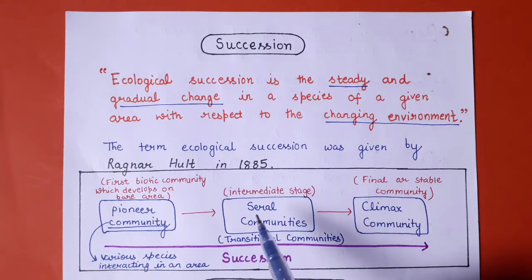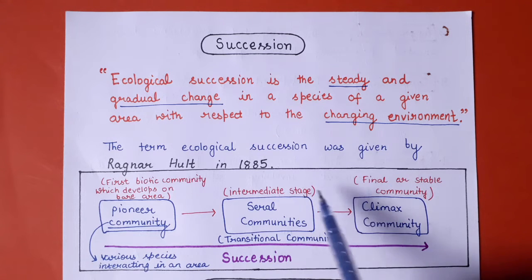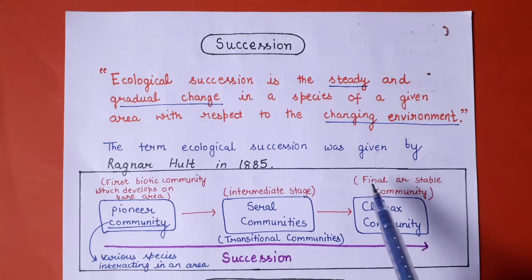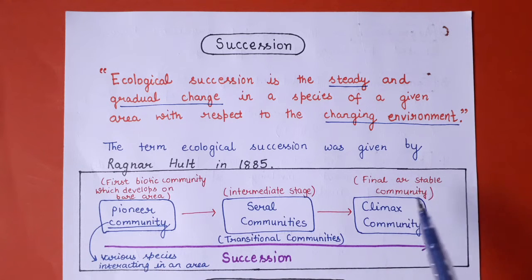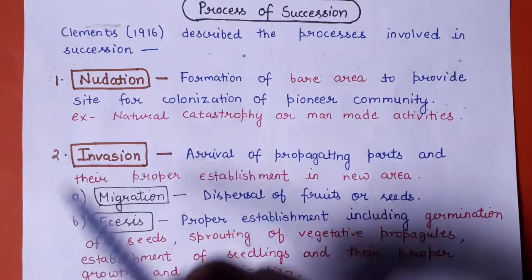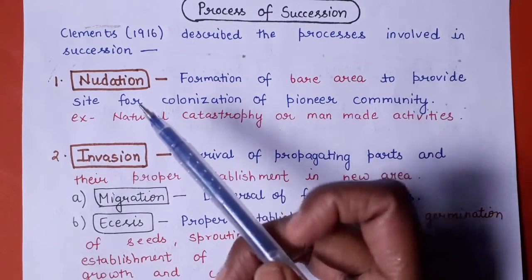The seral communities are regarded as transitional communities — the intermediate stage in the process of succession. The final stage involves the climax community, which is the final or stable community of the process of succession. Now, Clements in 1916 described the process of succession in the following steps.